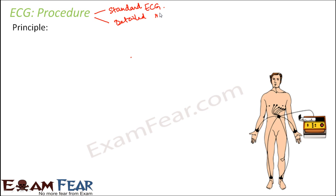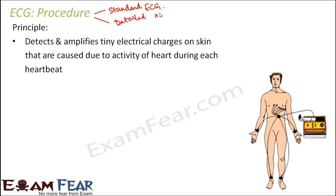Let us see what is the principle behind this ECG. It detects and amplifies the tiny electrical charges on the skin that are caused due to the activity of the heart during each heartbeat. With each cardiac cycle, there are a lot of electrical impulses running inside our body. Even though it is happening inside the heart, the blood flows out to different parts of the body, so there are certain electrical charges present inside our body. Those tiny charges are identified from our skin and then amplified to understand the activity of the heart during each cardiac cycle.